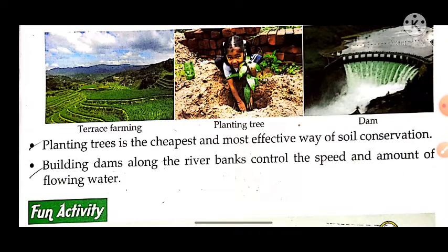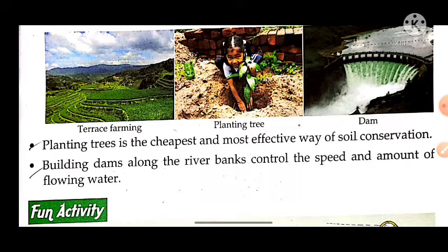The next method is dams. We can control the amount of flowing water using dams. When we discussed soil conservation, one reason for soil erosion is the flowing of water, which is also responsible for destroying soil.